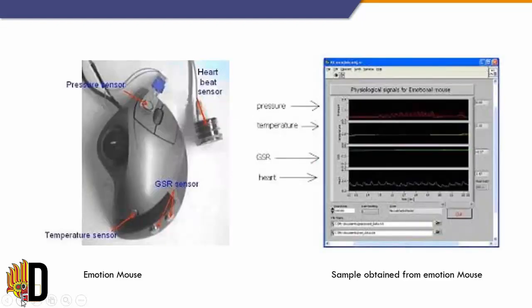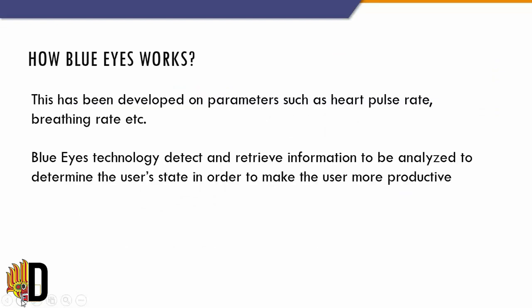Here is the image of the Emotion Mouse and a sample output obtained from it. Blue Eyes Technology has been developed based on parameters such as heart pulse rate, breathing rate, temperature, facial expressions, eye movements, and voice. It uses sensing technology to identify a user's actions, which are then analyzed to determine the user's physical, emotional, or informational state, helping the user to be more productive.